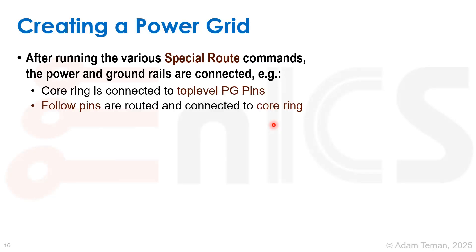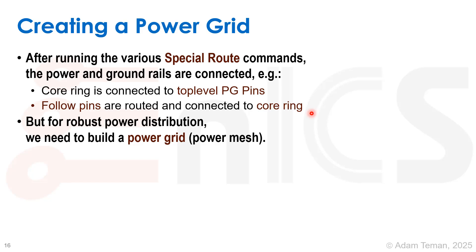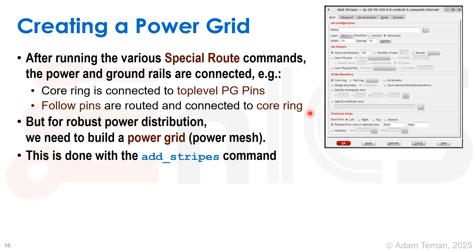Next we're going to create a power grid. After we ran the special route commands, the power and ground rails are connected - the core ring is connected to the top level PG pins and follow pins are routed and connected to the core ring. But for a robust power distribution we need to build a power grid, or power mesh depending on how you want to call it, and we do this with the add_stripes command.